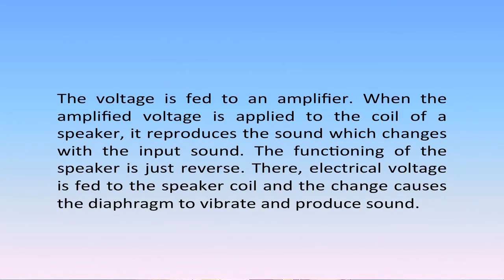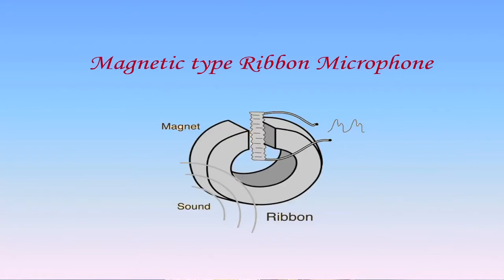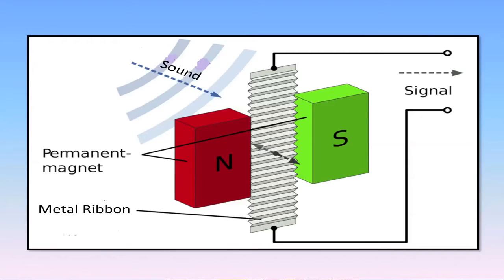When the amplified voltage is applied to the coil of a speaker, it reproduces the sound which changes with input sound. The functioning of the speaker is just the reverse — electrical voltage is fed to the speaker coil and the change causes the diaphragm to vibrate and produce sound. In a magnetic type ribbon microphone, a ribbon made of metal is suspended in a magnetic field. Sound waves cause the ribbon to vibrate, causing a change in magnetic flux through the ribbon, which induces an electric current that drives a speaker. The diaphragm of the speaker then vibrates and produces sound. The ribbon microphone senses pressure gradient and not just pressure, and therefore detects sounds from both sides.